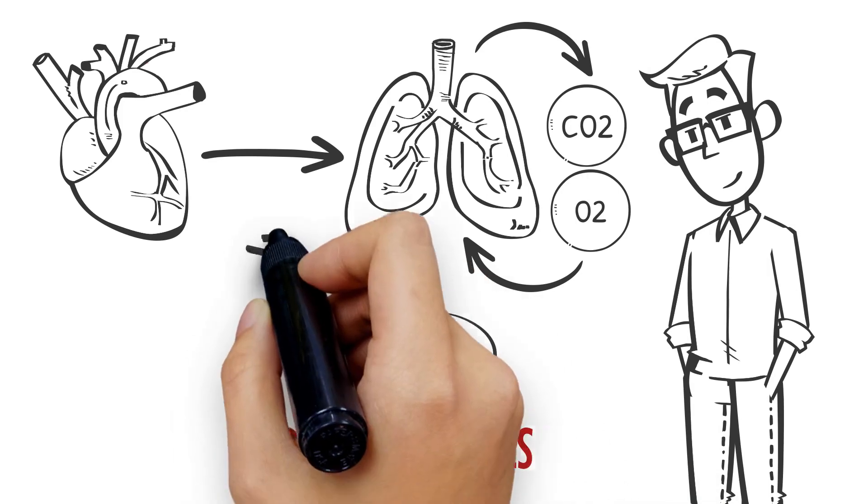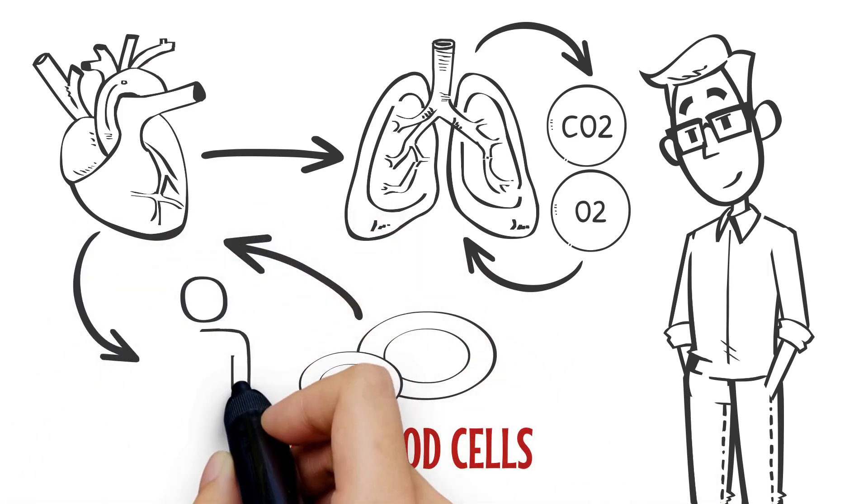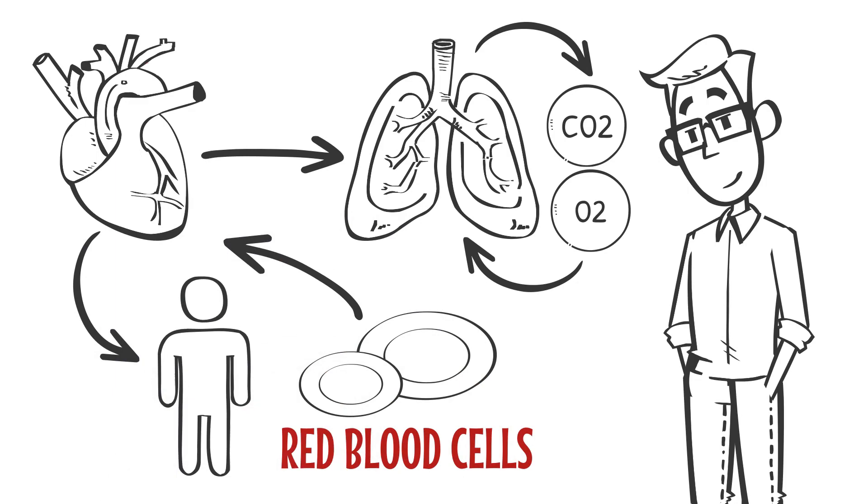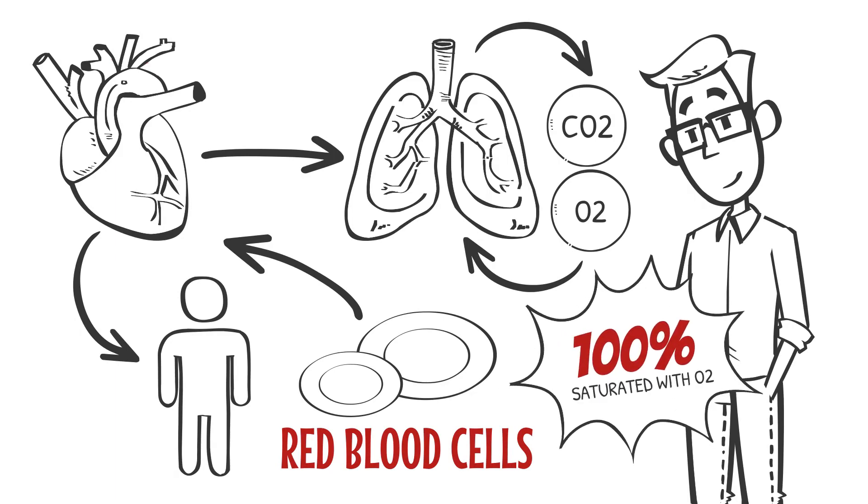Blood returns to the heart and is then pumped throughout the body. Typically, as this system is working properly, we are already near 100% saturated with oxygen. As blood circulates, oxygen leaves the red blood cells and enters your body's tissue and cells.